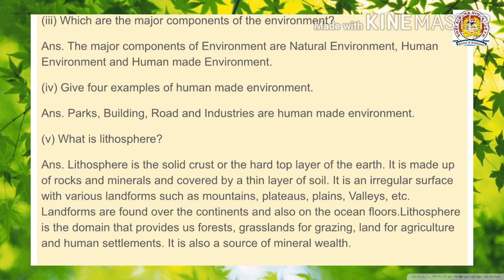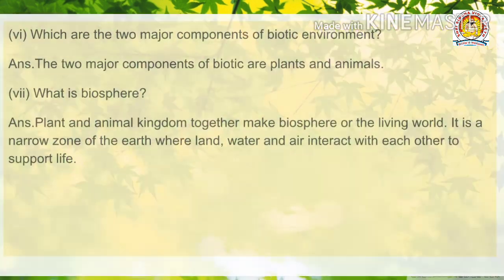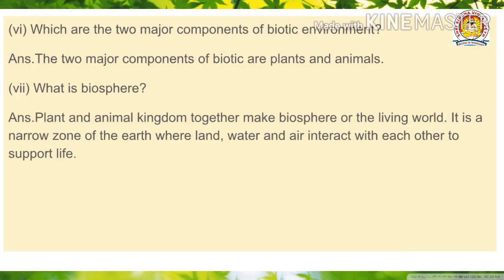Landforms are found over the continents and also on the ocean floor. The lithosphere is the domain that provides us forests, grasslands, and lands for agriculture and human settlement. These are sources of mineral wealth. Which are the two major components of the biotic environment? The two major components are plants and animals.